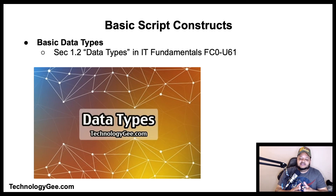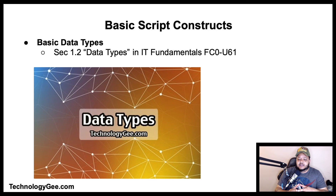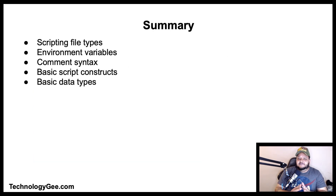When writing scripts, coders use different data types to inform the computer about how to process different kinds of data. The basic data types are integers, floating point numbers, characters, and strings. For more information on data types, check out my video titled 'Data Types' in the IT Fundamentals playlist, video 1.2.